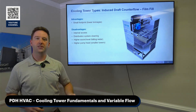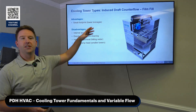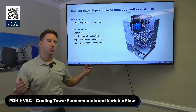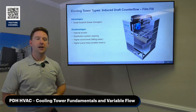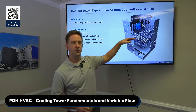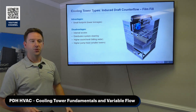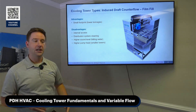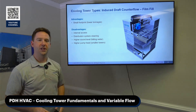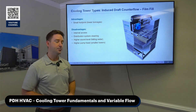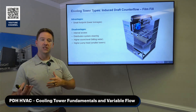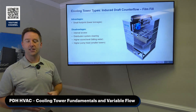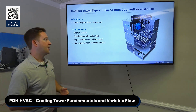Some pros and cons of counter-flow towers: one of the biggest benefits is it was designed to fit into a small space. If you're up on a roof with not a lot of room, it can fit. It has air inlets on all four sides, and under 750 tons it'll have a smaller footprint than the cross-flow tower. You can place one cell in a corner on a building and get the cooling you need. However, because it was designed to be compact, it's not as easy to access the maintenance parts of the tower.